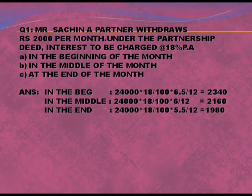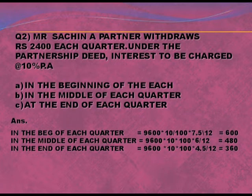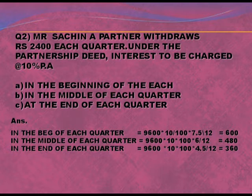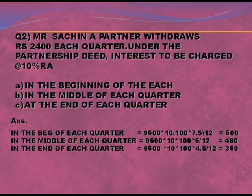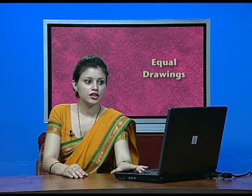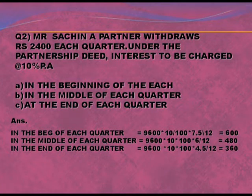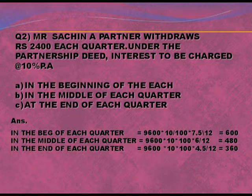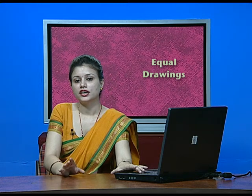Next question: Mr. Sachin withdraws 2,400 each quarter; interest is at 10% per annum. Calculate interest on drawing at the beginning, middle, and end of each quarter. Since he withdraws 2,400 per quarter, for the whole year he will withdraw 9,600. Total drawing is 9,600 in all cases; the rate is the same; only the average period changes according to beginning, middle, or end.